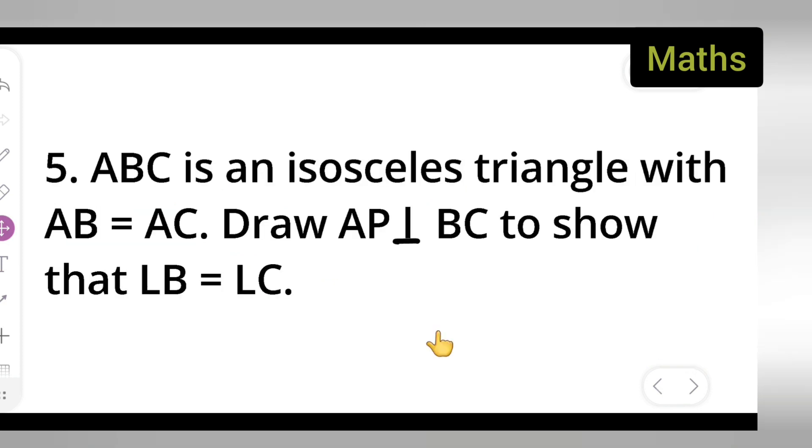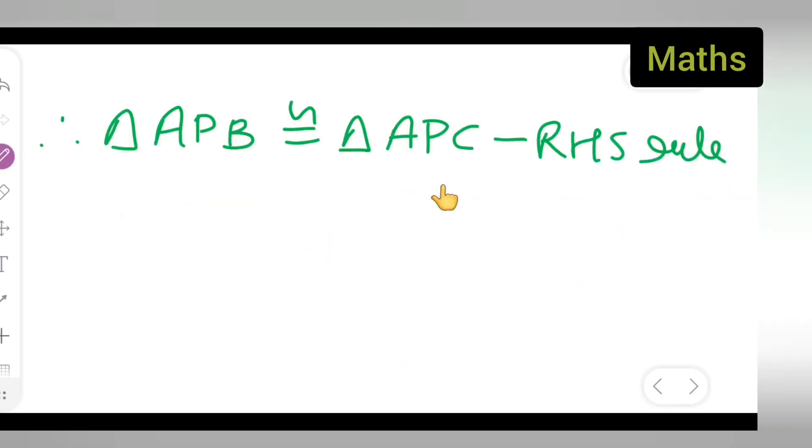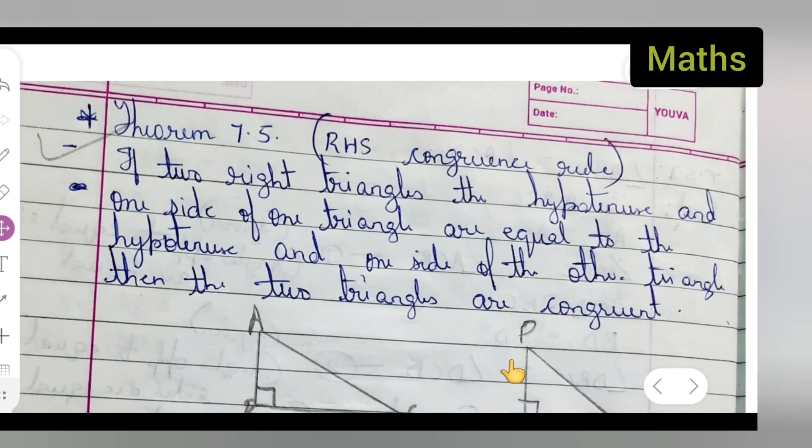Now you can say that angle B is equal to angle C by CPCT, that will be the corresponding parts of congruent triangles. Angle B is equal to angle C, and RHS rule I have given it over here. You can take down this part.